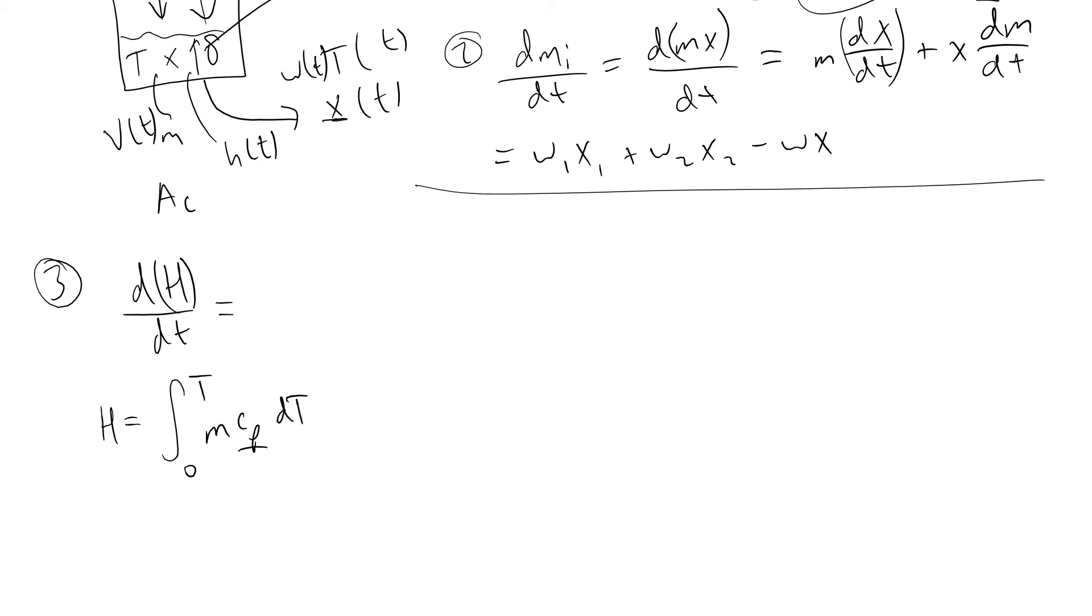The definition of enthalpy H equals the integral from 0 to T of m cp dT. If we can let cp be independent of temperature—in practice it isn't but we can—we pull that out.